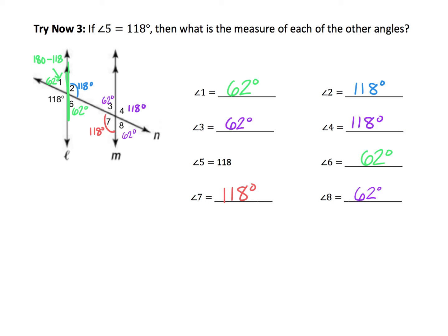Here are the solutions for the last three angles. Angle 3 is 62 degrees — you could use the fact that it is alternate interior with angle 6 which is 62 degrees, or that it forms a linear pair with angle 7. Angle 4 is 118 degrees, and angle 8 is 62 degrees.